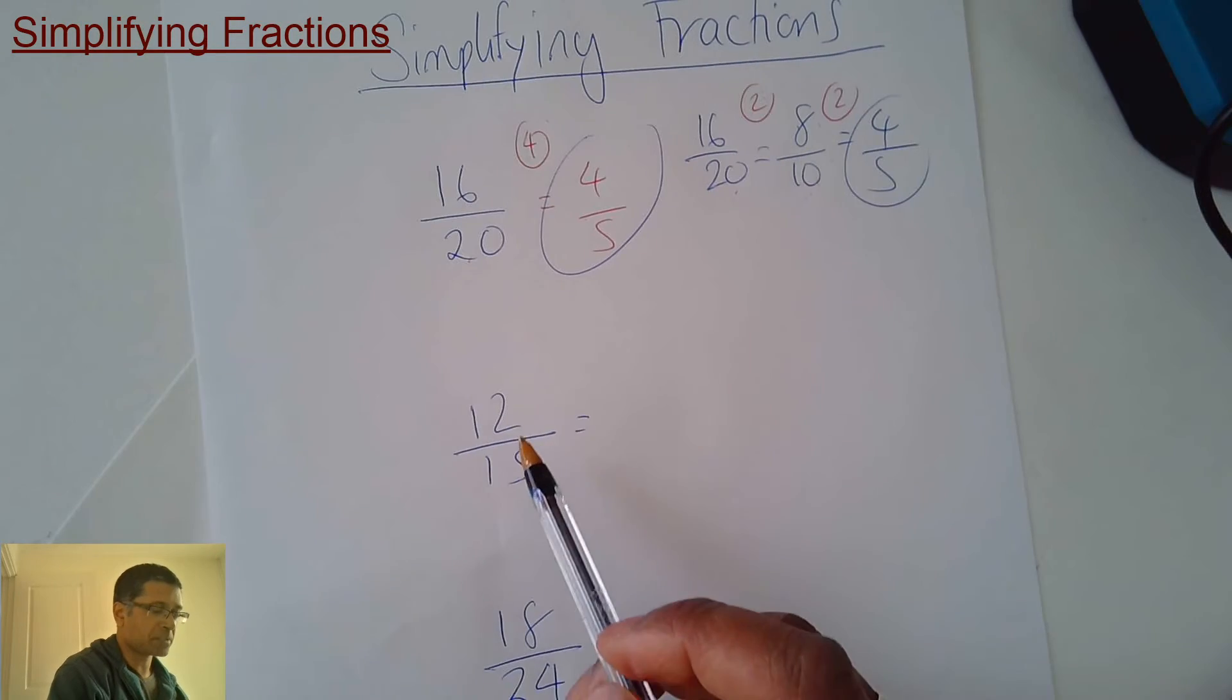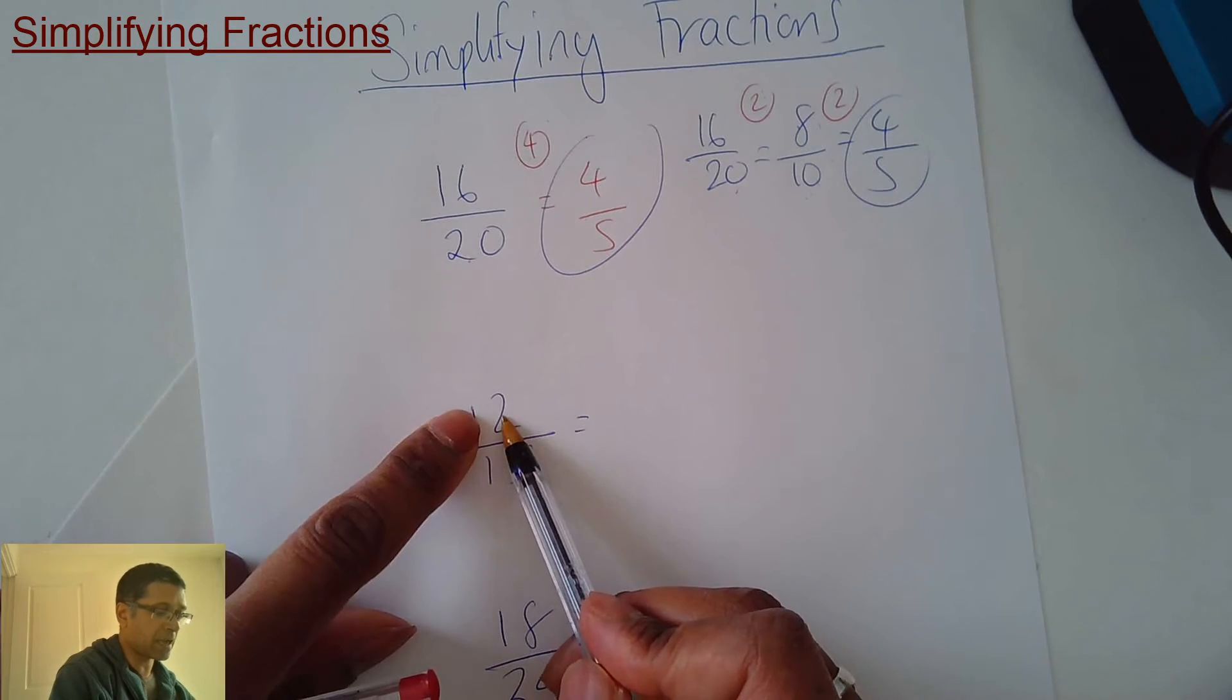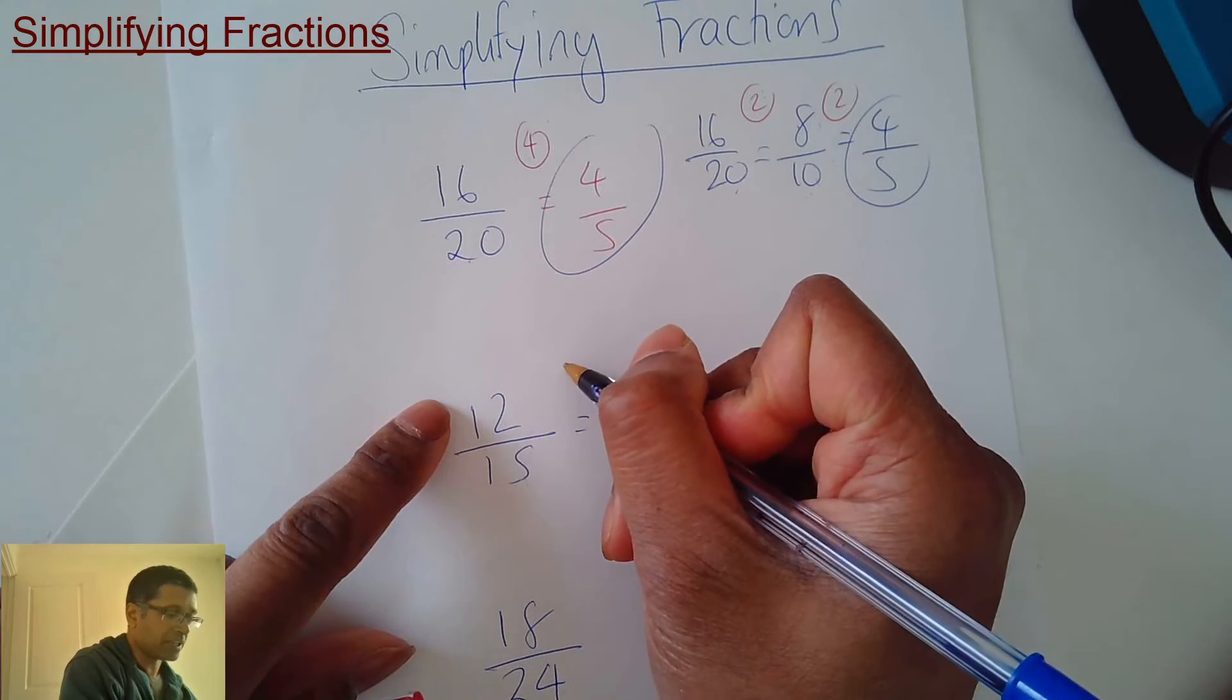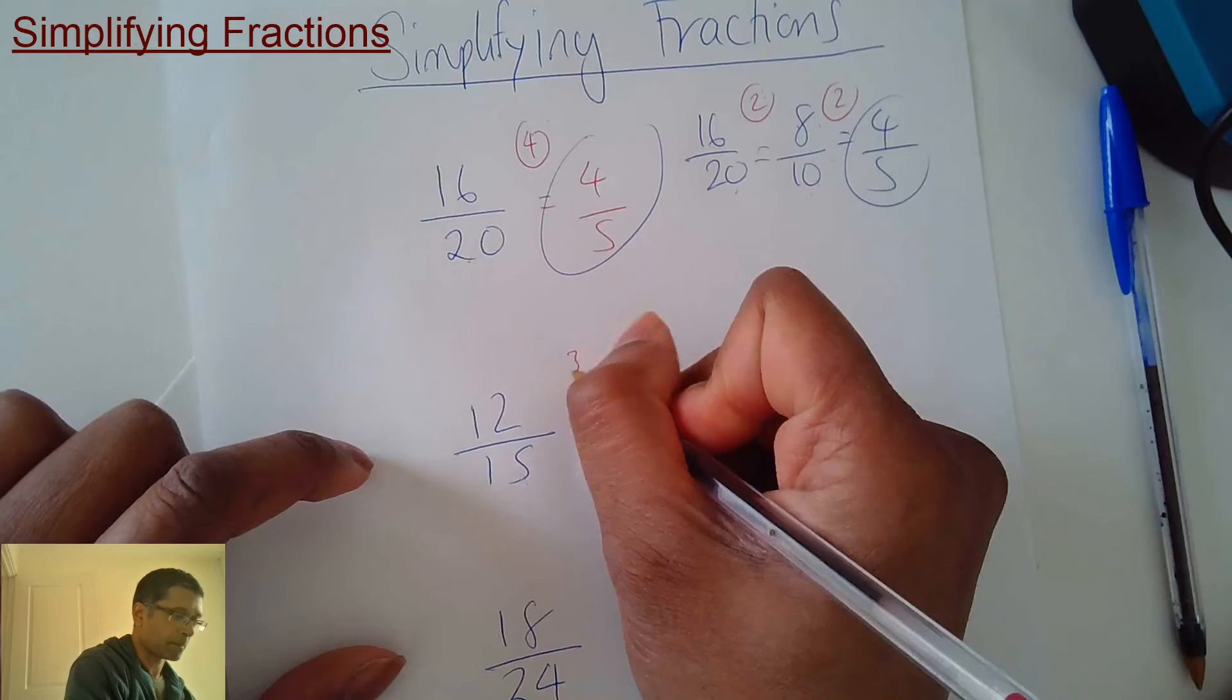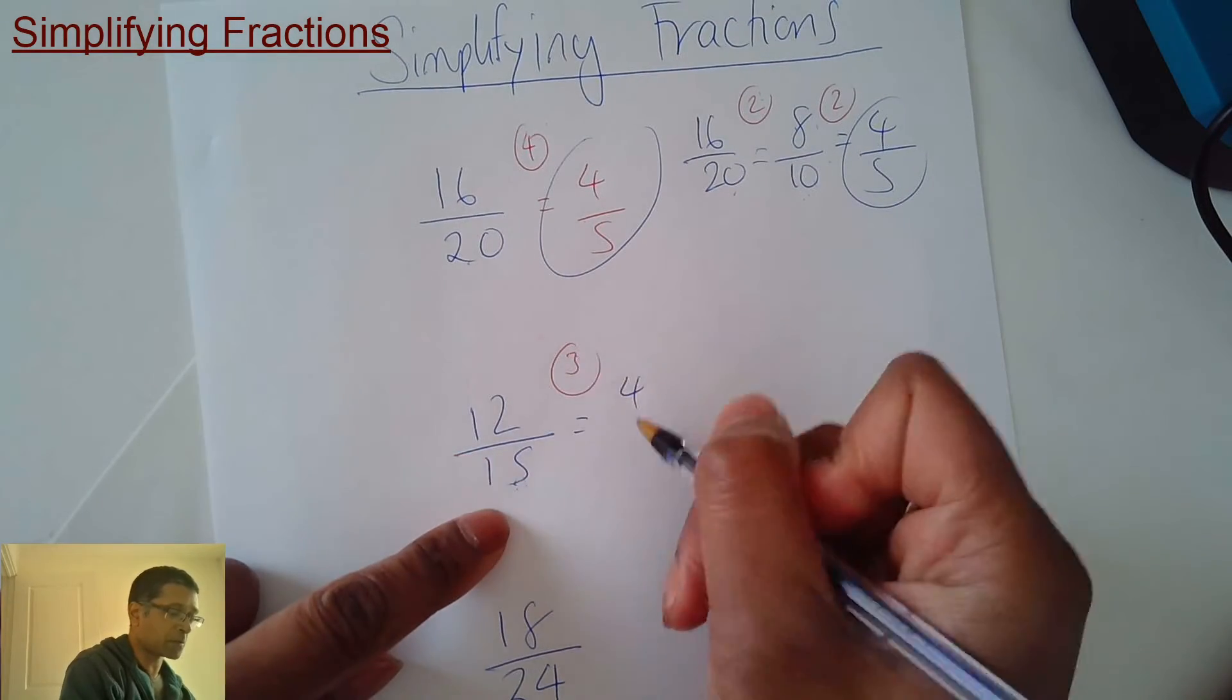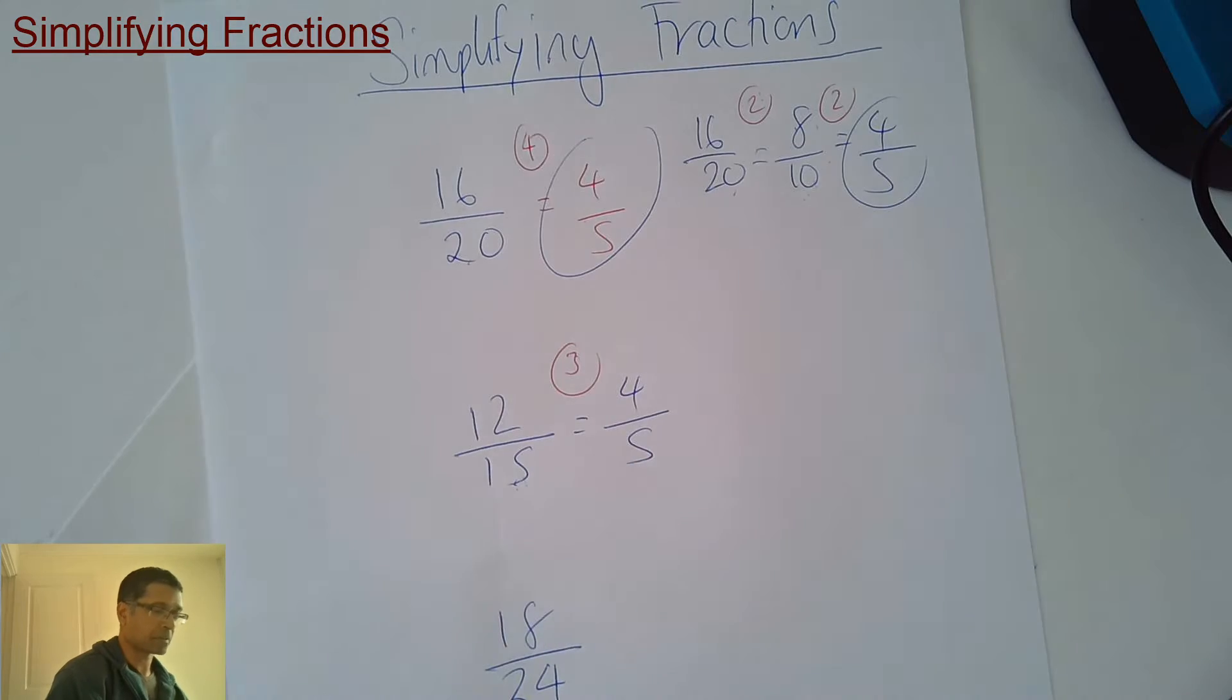Right. Can you think of a times table that's got 12 in it and 15 in it? The biggest times table. 3. So 12 divided by 3 is 4. 15 divided by 3 is 5. Another one.